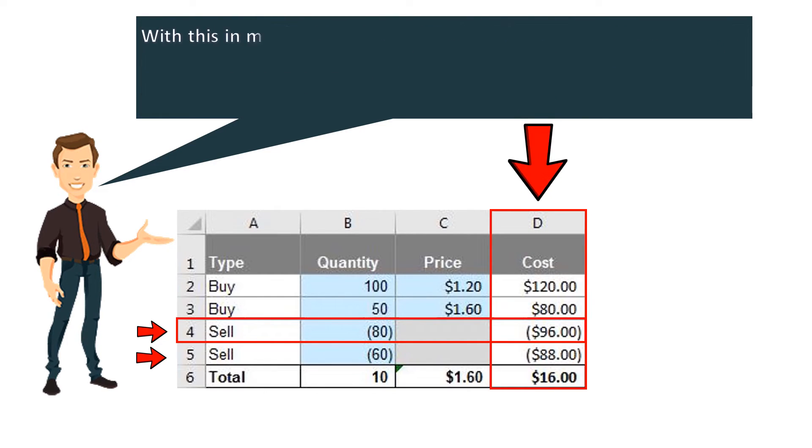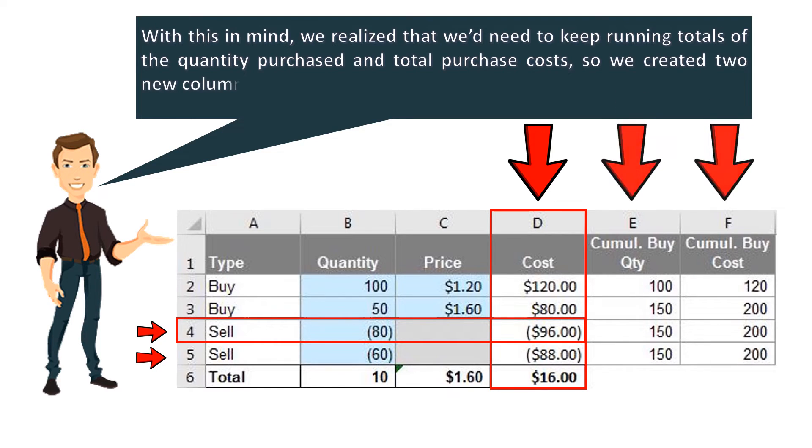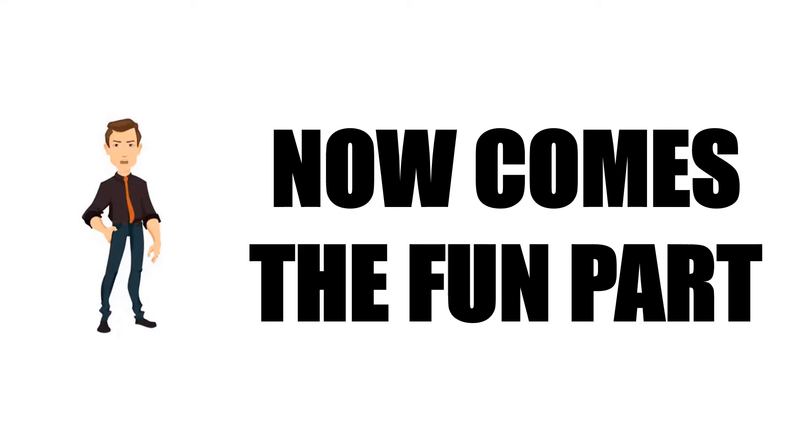With this in mind, we realized that we'd need to keep running totals of the quantity purchased and total purchase costs, so we created two new columns to contain these calculations. And now comes the fun part.